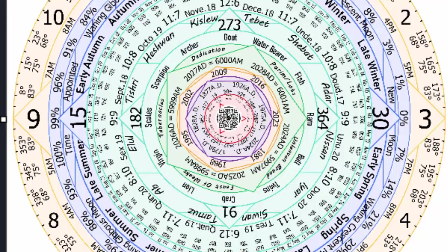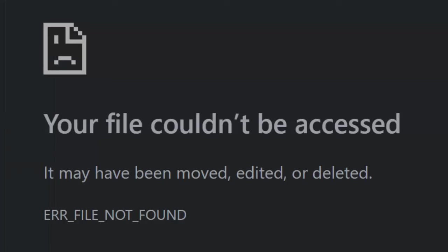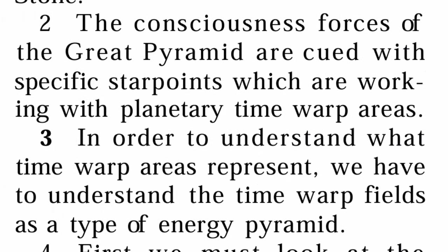We would only really have to start understanding the Maseroth. Specific star points which are working with planetary star warp areas. This particular star chart doesn't have the planets on it at all — they aren't even taken into account. The planets are not mentioned in that part of Enoch, and that's why they're not included.